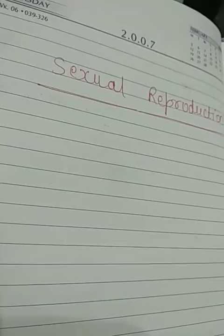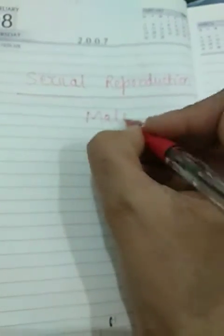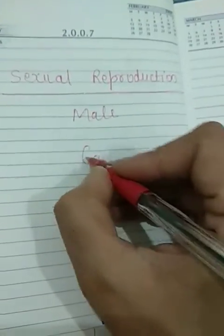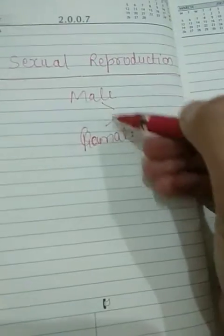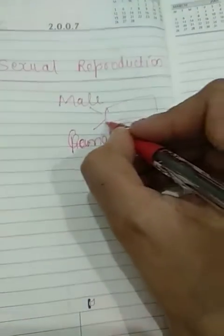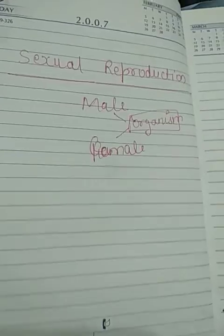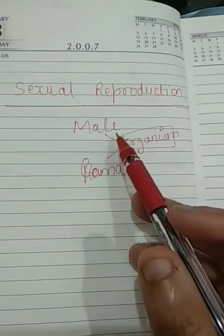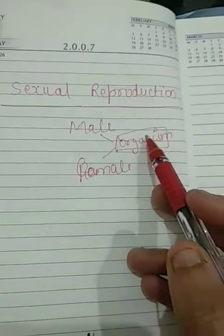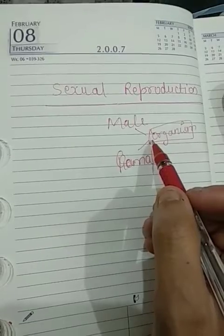We need one male and one female of that organism for sex to take place. The fusion between the male and female gametes gives rise to a new organism. The female and male gametes each contribute, and they fuse together to form a new organism. So that is the basic logic of sexual reproduction. In this type of reproduction, the new individuals formed are not identical to their parents.